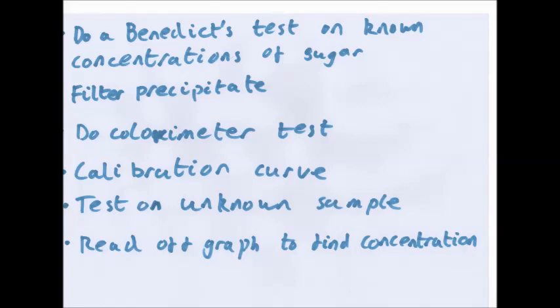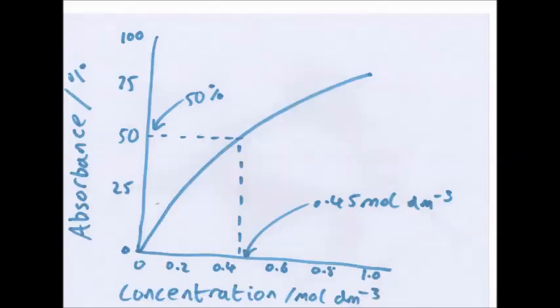You do a Benedict's test on known concentrations of a sugar — let's say glucose. You do the Benedict's test, filter the precipitate that forms, and do a colorimeter test. Put that precipitate-free solution in the chamber, shine the light through, and pick up the absorption. Then plot this onto a graph of absorption against concentration to create a calibration curve. You then test the unknown sample, get a reading of absorption, and read that off the graph to find the concentration. For example, if you get 50% absorption, you read off the curve — here it says about 0.45 mol per dm³.